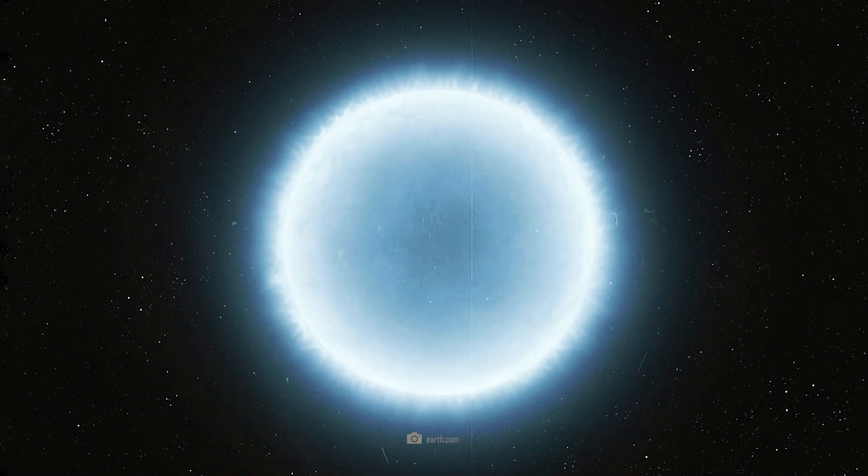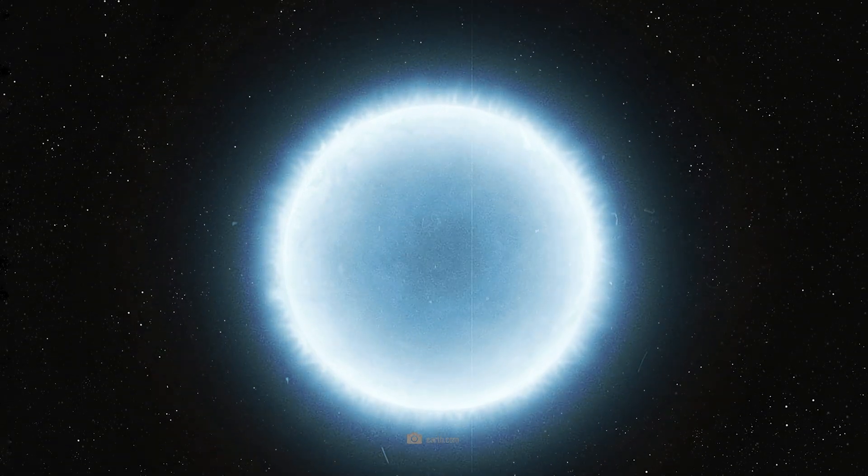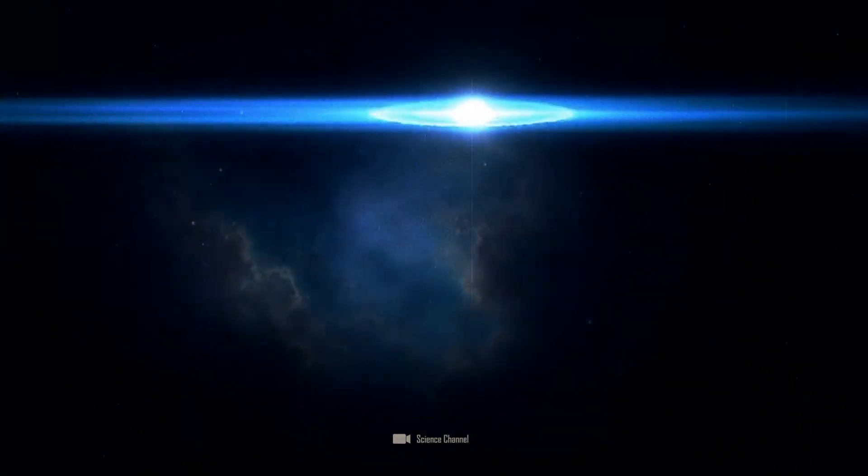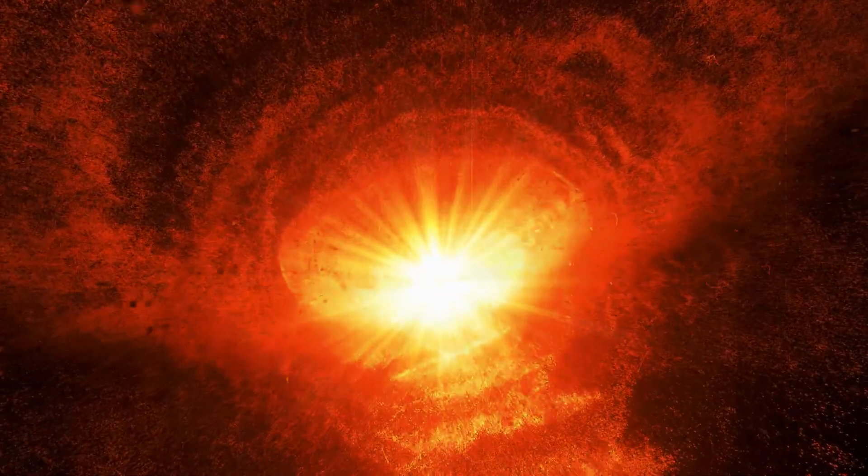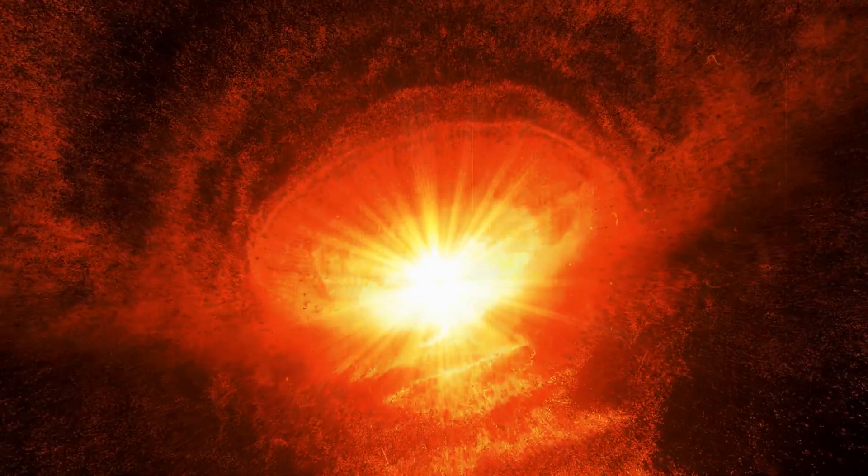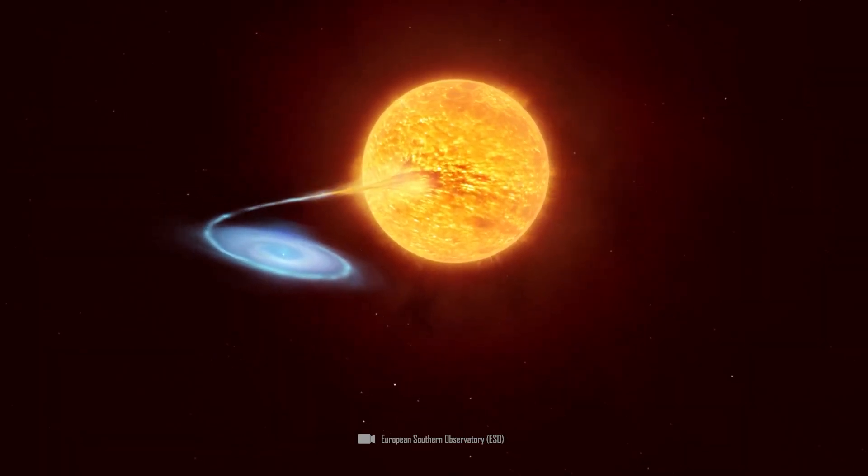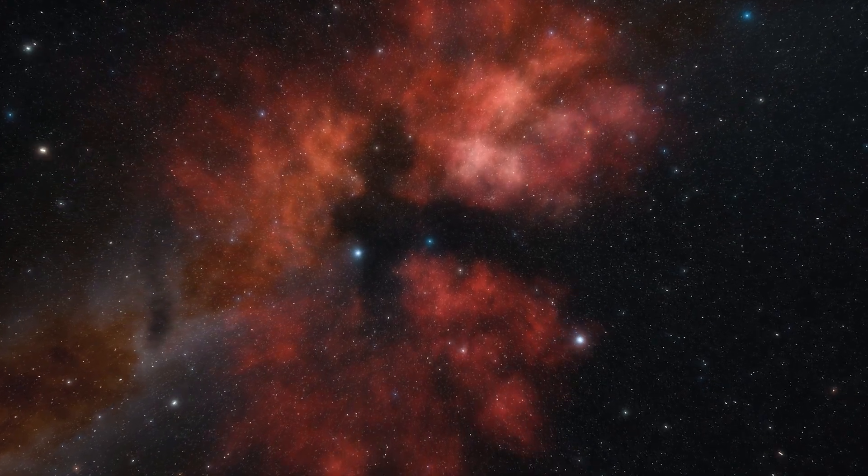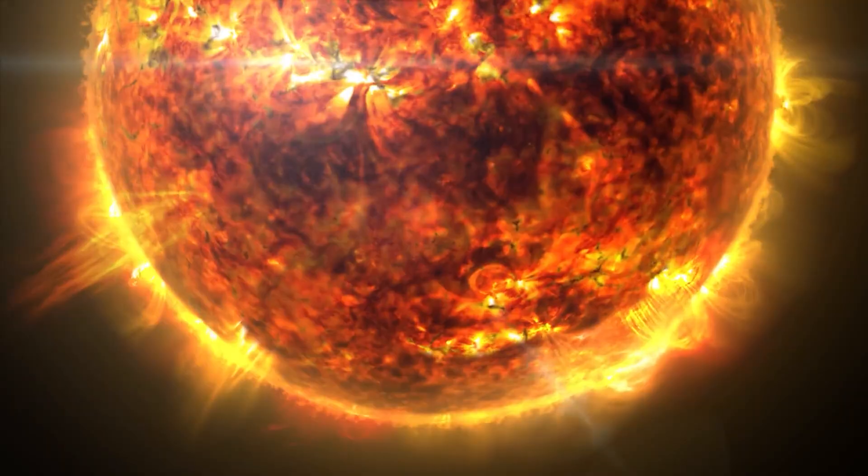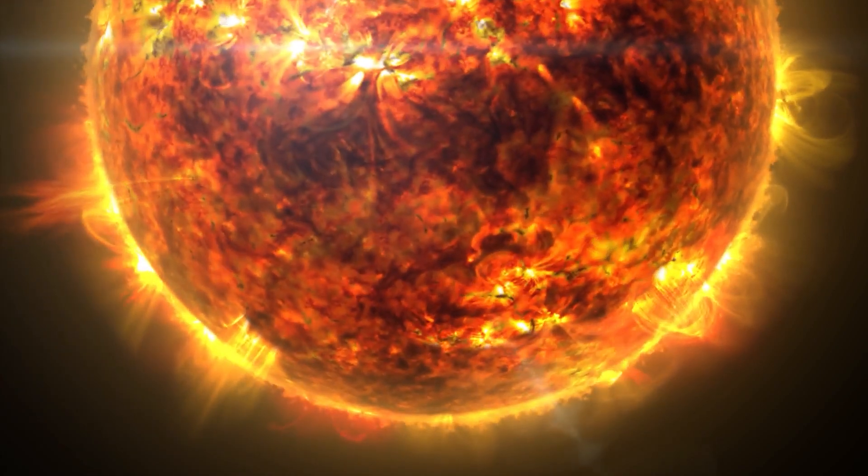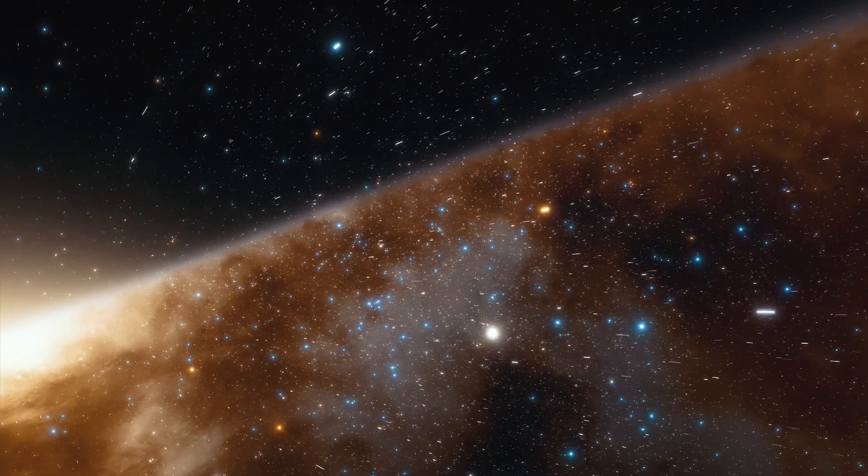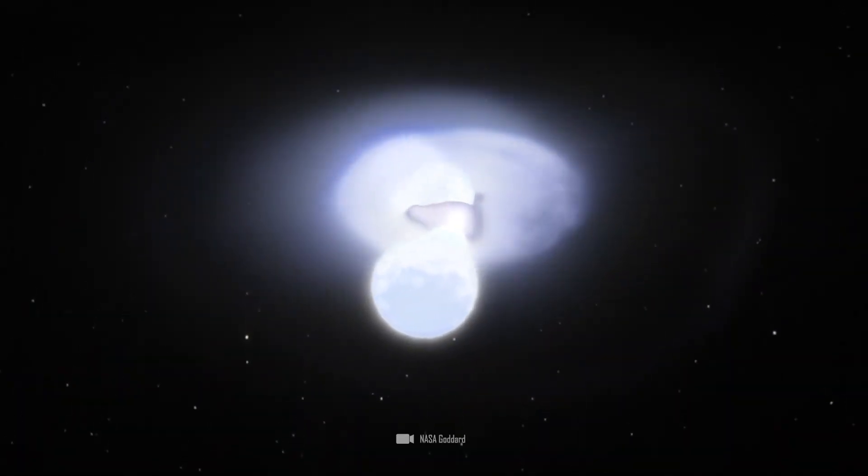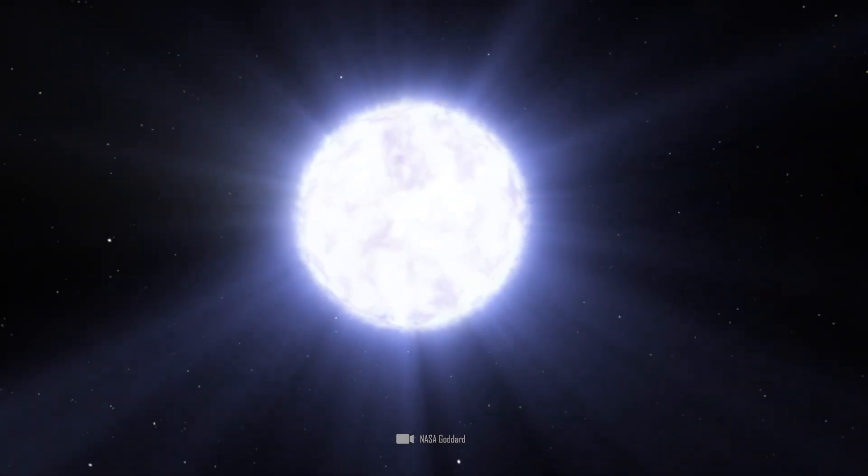This white dwarf is an extremely dense, compact remnant of a former sun-like star. After the original star had used up its nuclear fuel, its core collapsed, the outer layers were ejected, and a white dwarf remained. The companion star from which the white dwarf is extracting material is a red giant. These outer layers are gradually attracted to the white dwarf and accumulated until the conditions are right for a thermonuclear explosion. This explosion will then dramatically increase the brightness of the white dwarf and give us a nova.